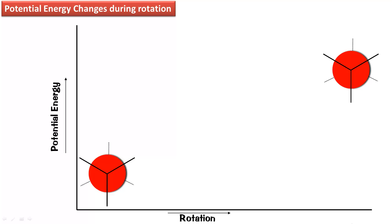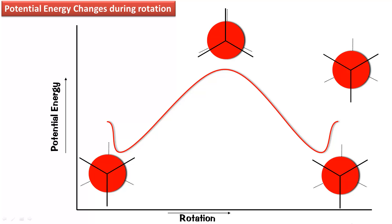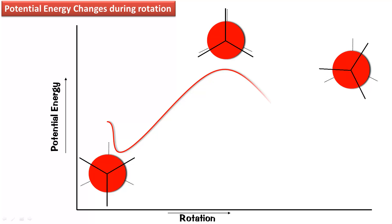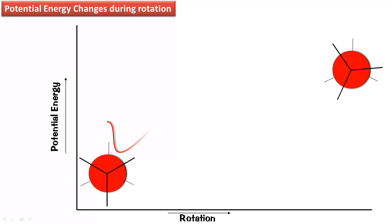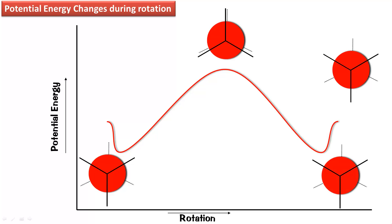I am rotating the molecule and moving the graph simultaneously. As the molecule rotates, the energy of the system increases, it reaches the peak value at eclipsed and comes back down at the staggered. Rotation - graph going up - eclipsed - comes down - staggered again. That is the potential energy curve with respect to the rotation angle. This barrier is 3 kcal - the torsional strain.